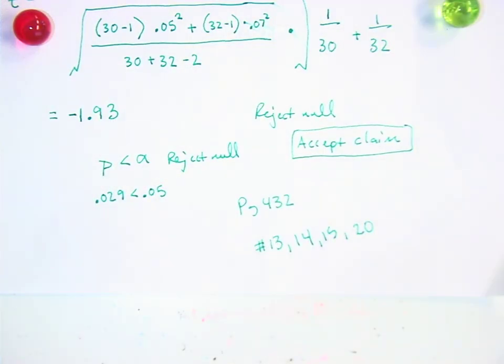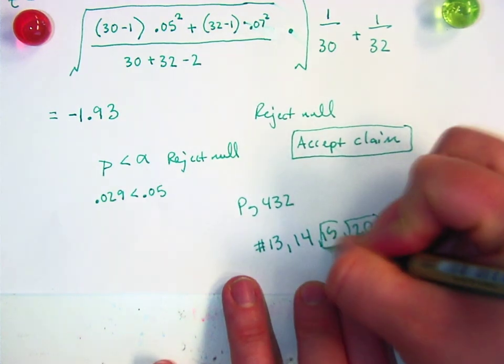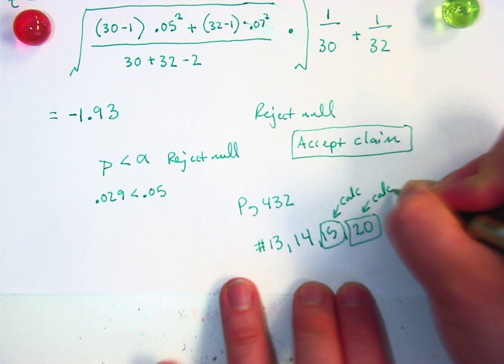Alright, so 13, 14, 15, and 20. Let's say that these two are calculator and these two are by hand.